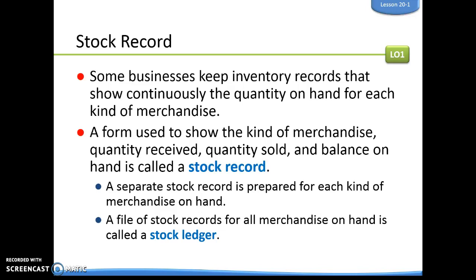Some businesses keep inventory records that show continuously the quantity on hand for each kind of merchandise, day to day. A stock record is a form used to show the kind of merchandise, quantity received, quantity sold, and the balance on hand. A separate stock record is prepared for each kind of merchandise on hand, so we have different stock record sheets for each product. A stock ledger is simply a file of all the stock records of all merchandise on hand — it's like the big book that contains all of the pages, which are the stock records.